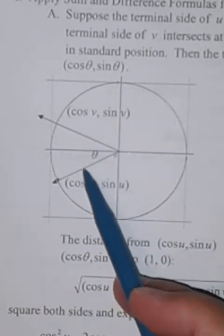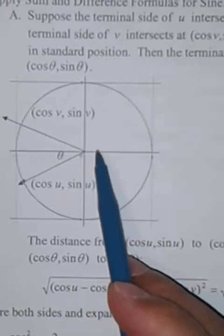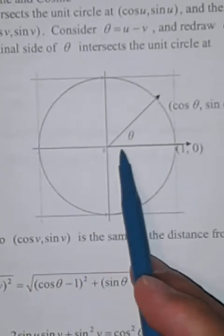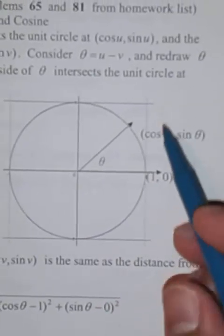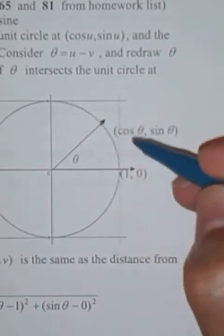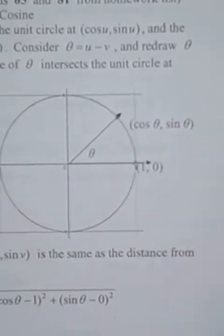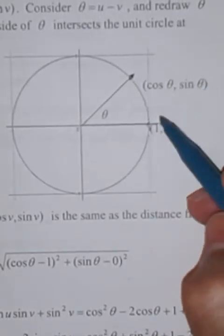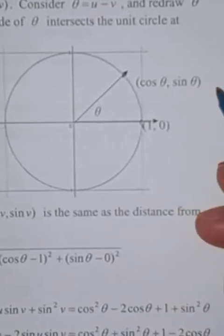Now I take angle theta — the difference between u and v — and superimpose it so that one of its sides is along the positive x-axis. The terminal side of theta intersects the unit circle at (cosine theta, sine theta). The distance from that point to (1, 0) equals the previous distance. Using the distance formula: square root of (cosine theta minus 1) squared plus (sine theta minus 0) squared. Squaring both sides and solving for cosine of theta gives us the formula.